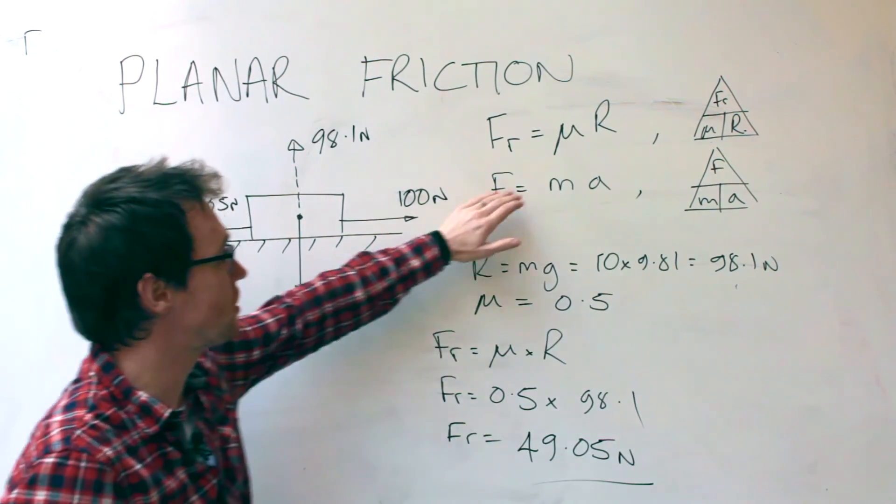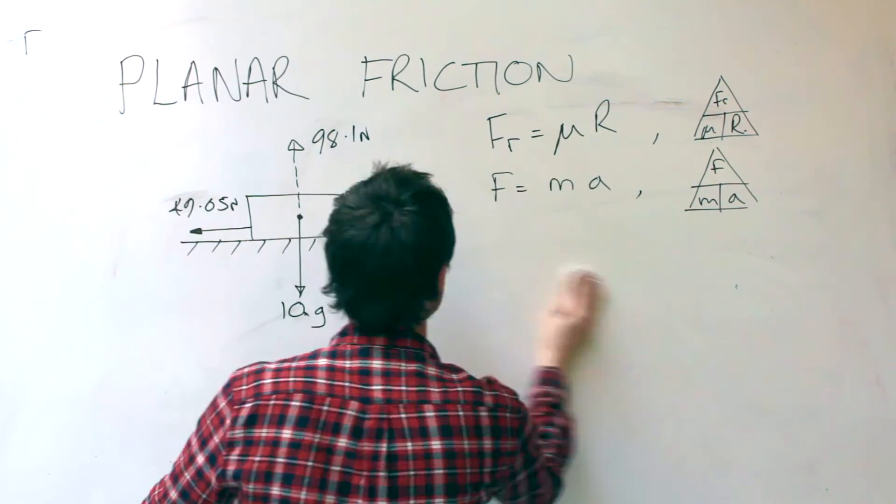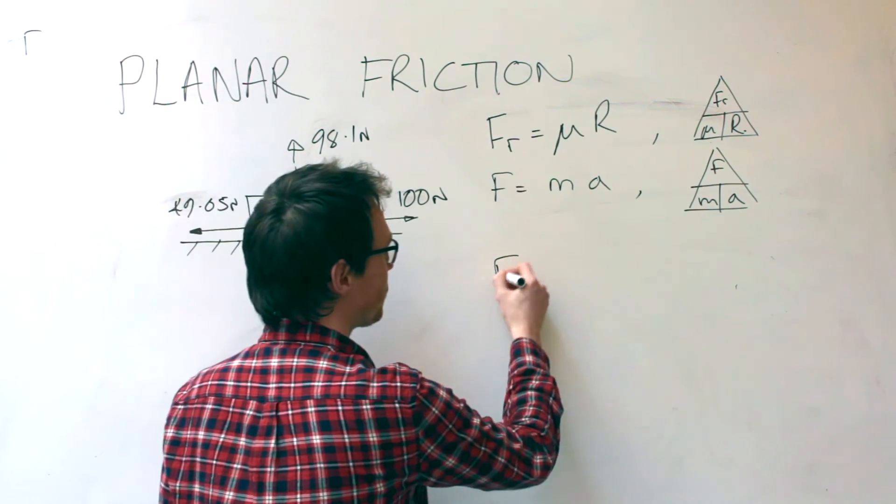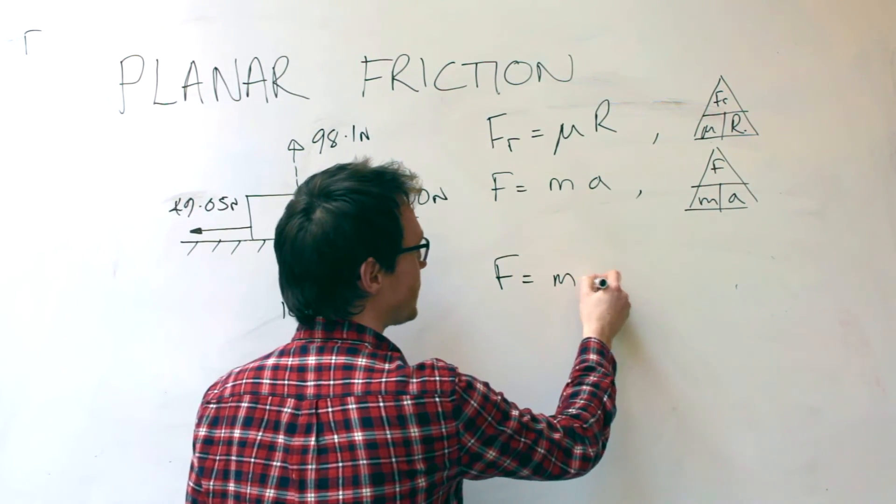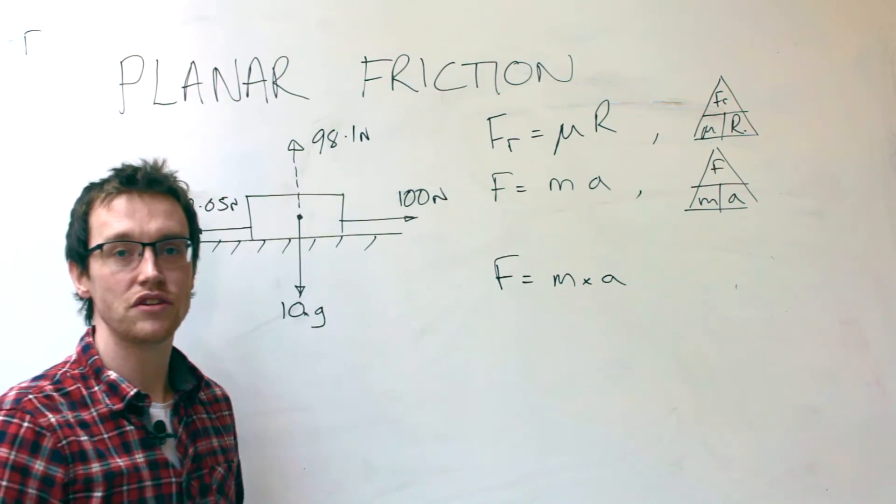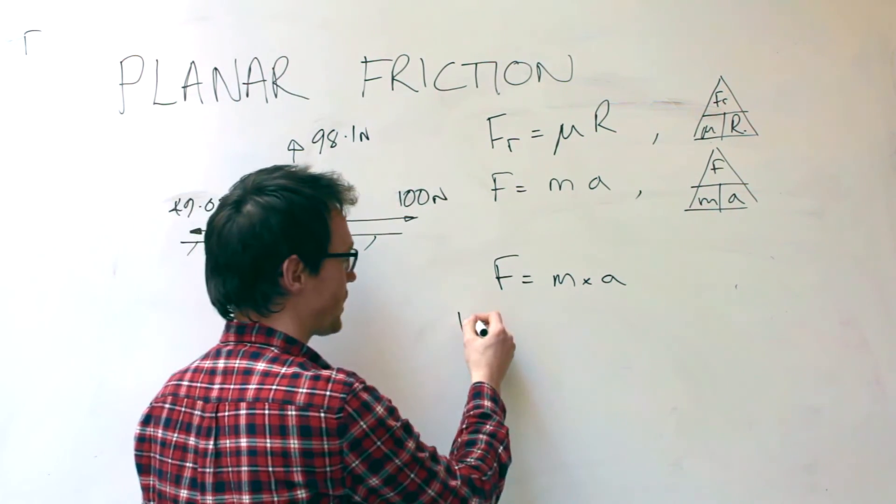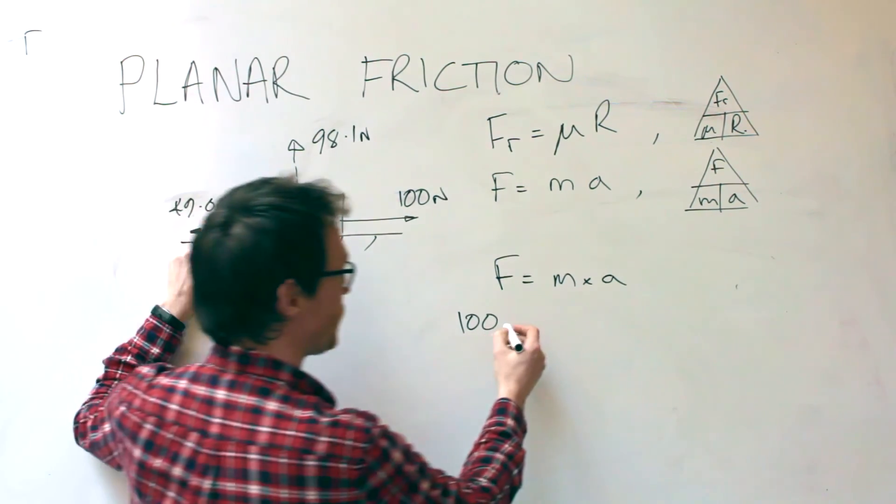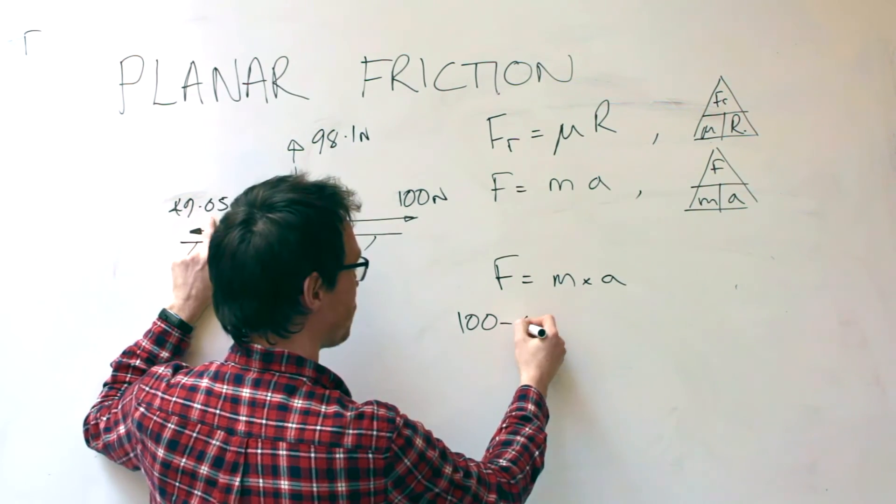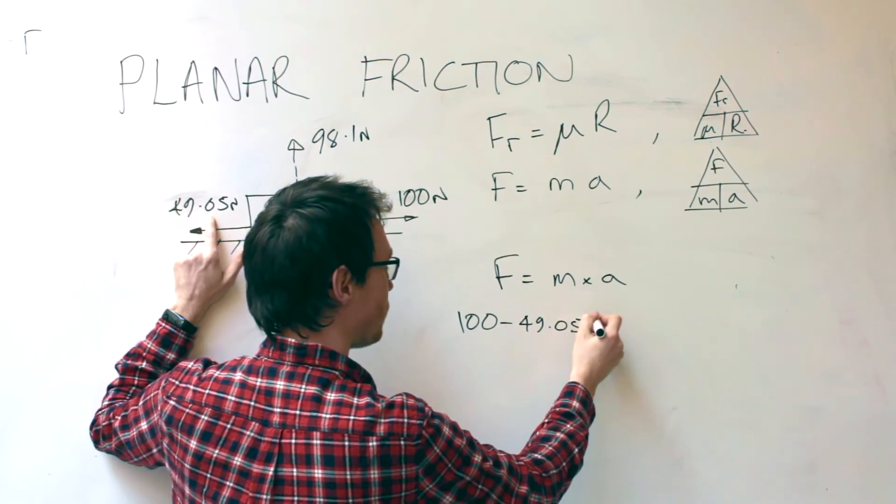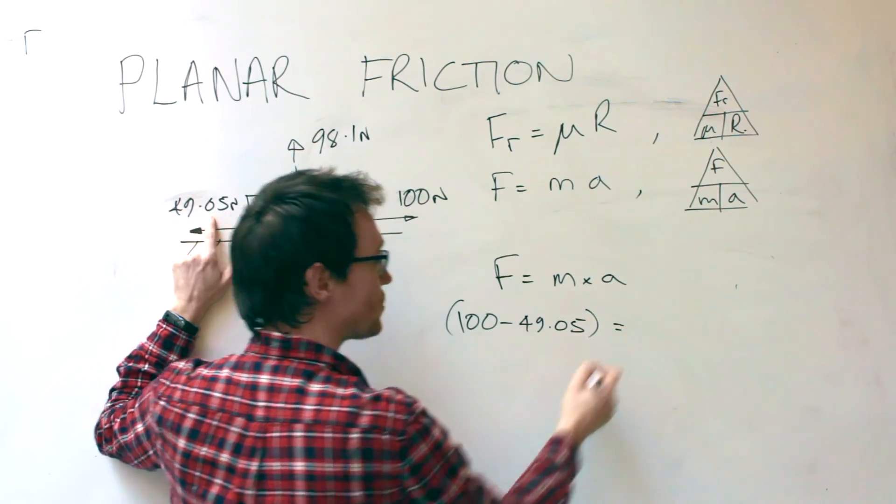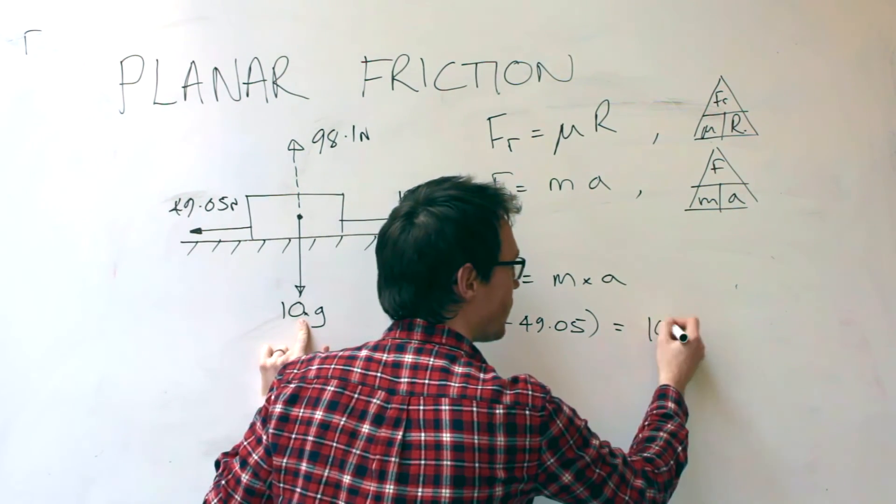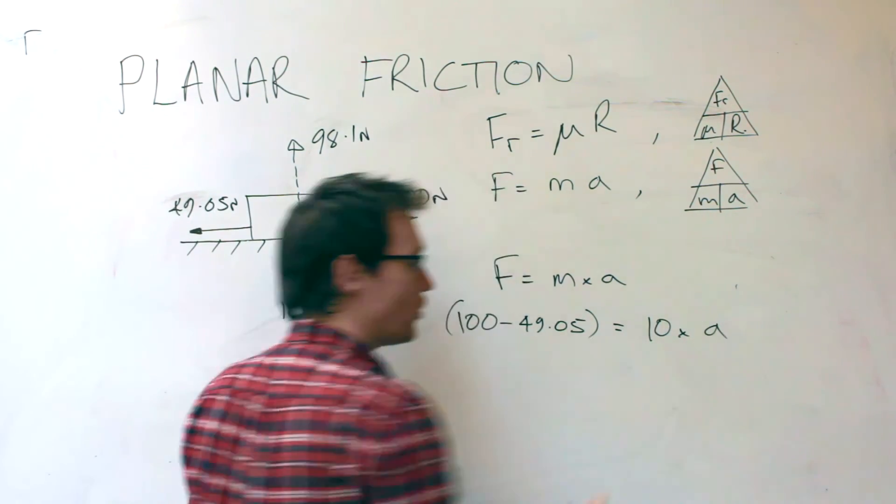To do that we're going to use Newton's second law. Newton's second law says that the force is equal to the mass times the acceleration. In our case we've got a force of 100 newtons, tractive force, being retarded, being slowed by the frictional force. So minus 49.05 is equal to the mass of the block, not the force, the mass of the block, which in this case was 10 kilos, times an unknown acceleration.